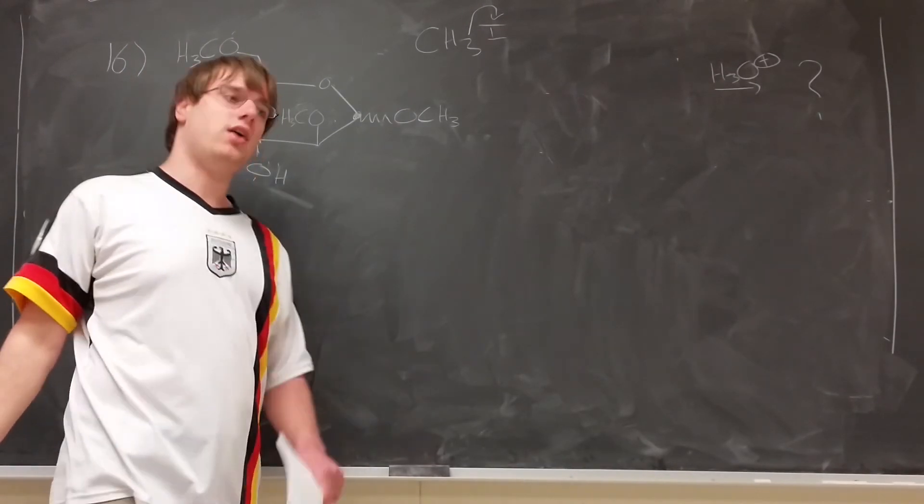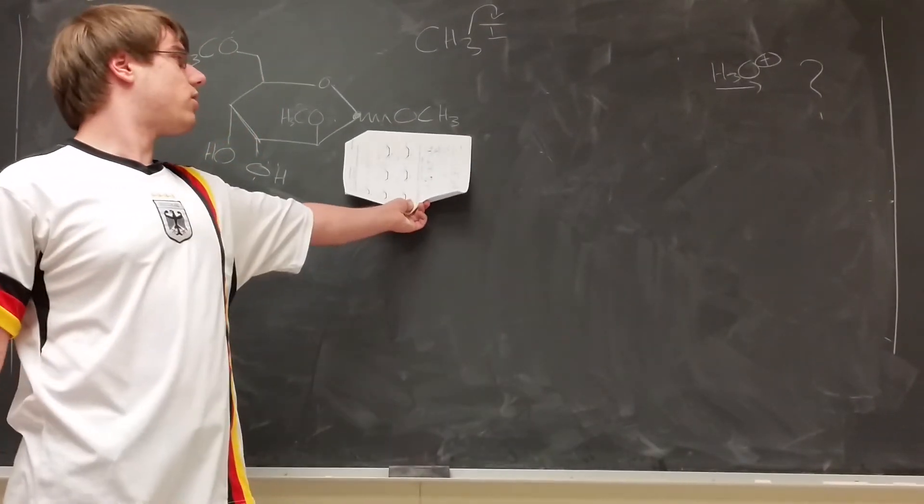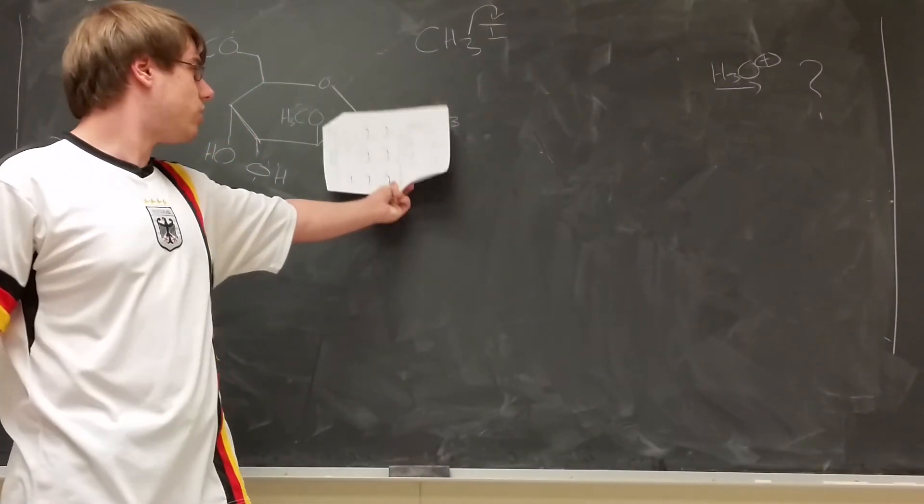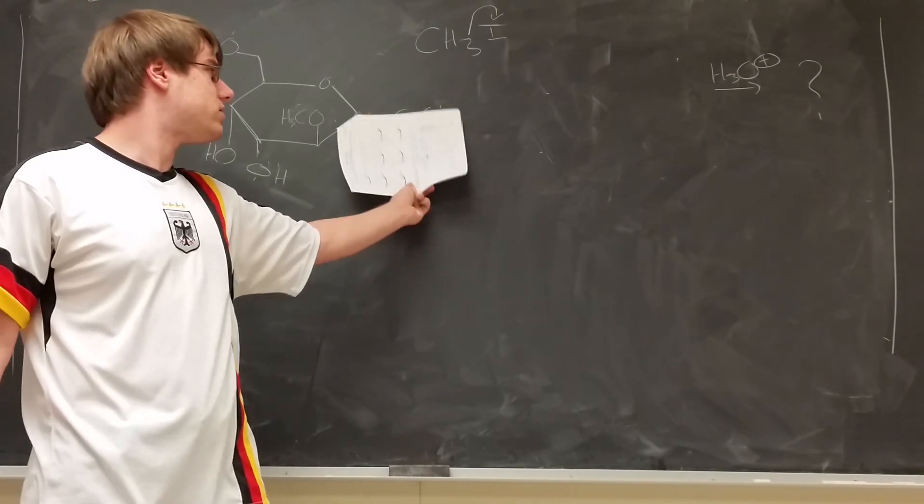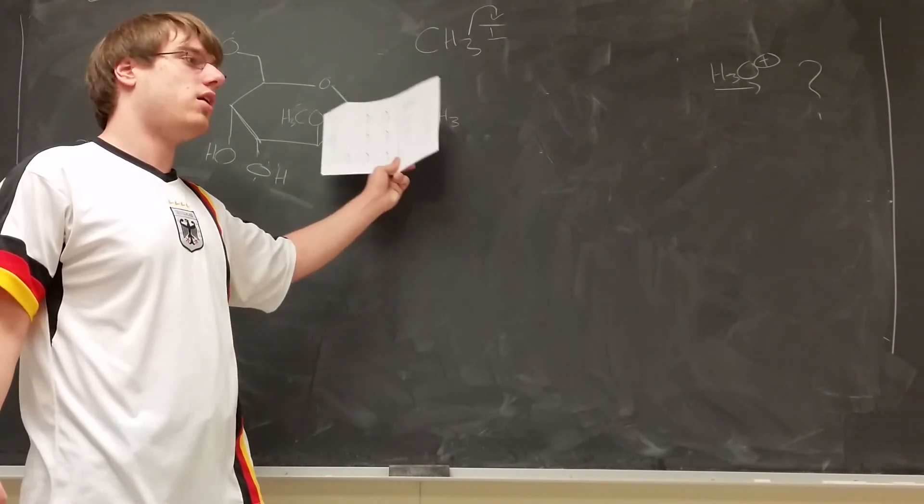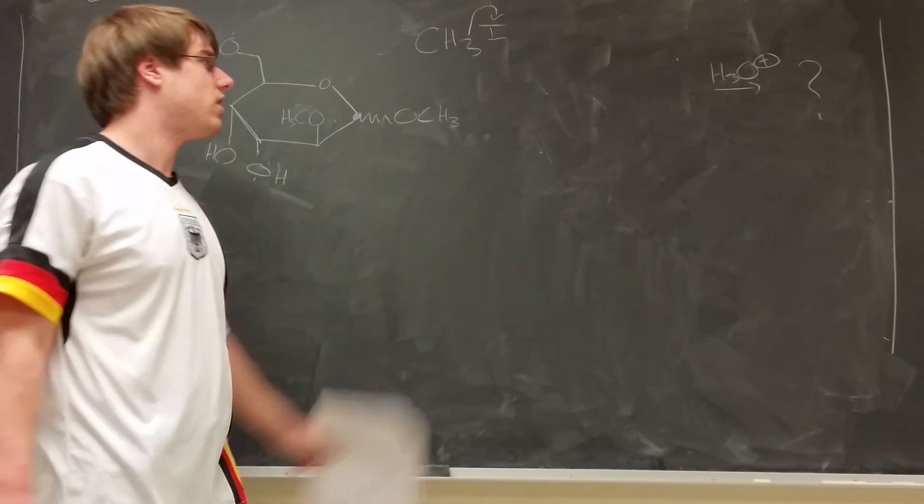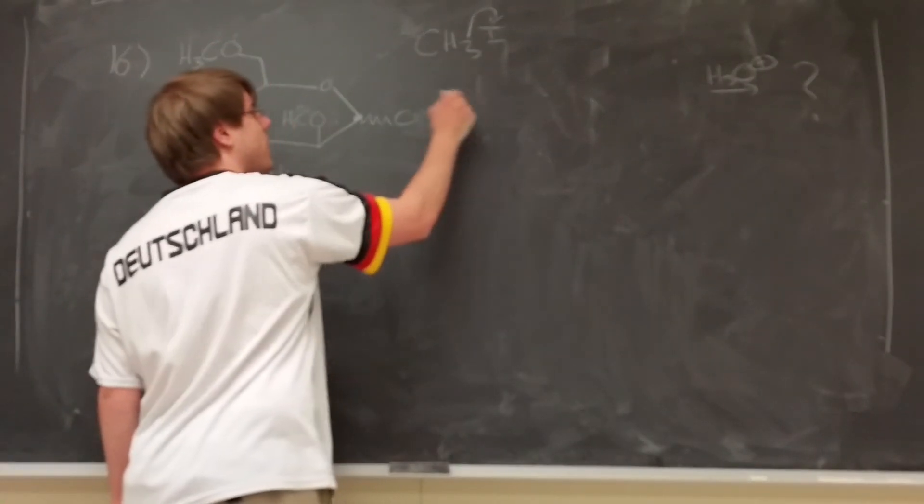There's another thing that H3O positive does. And it turns the anomeric O into an OH. So if it's not an OH already like it isn't here, it's an OCH3, H3O positive will turn this back into an OH.